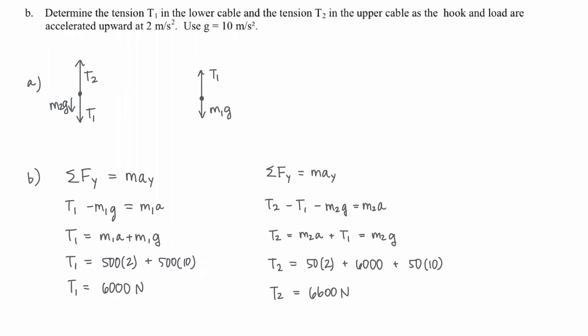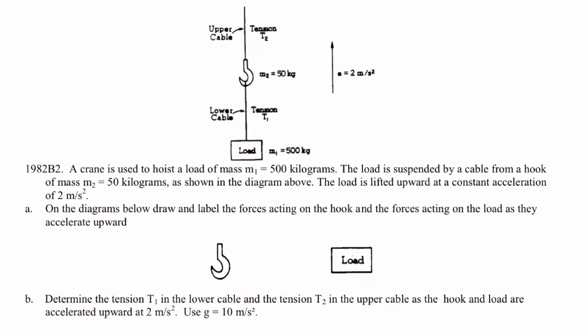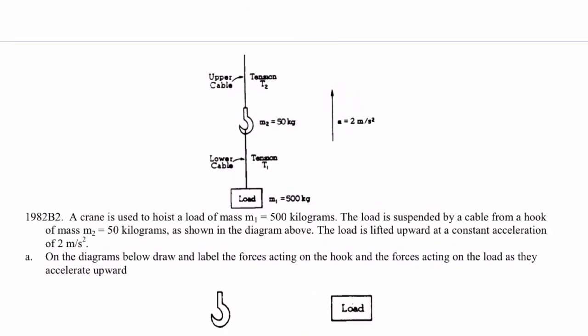And we get that T2 is 6,600 newtons. And that should make sense because T2 is responsible for holding more weight than T1. There's going to need to be a greater force associated with that.